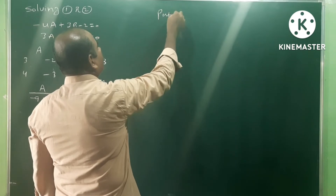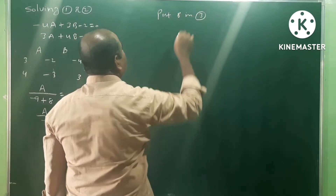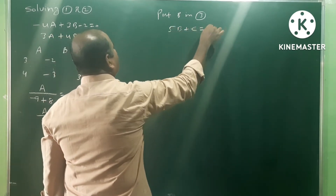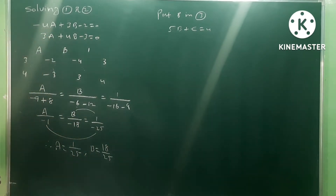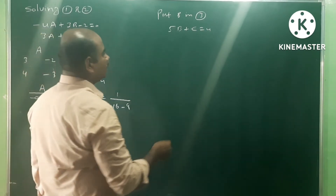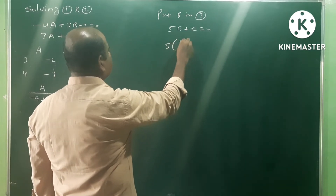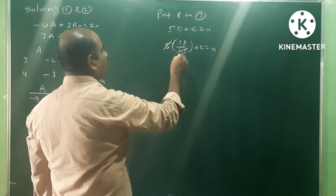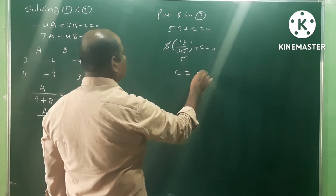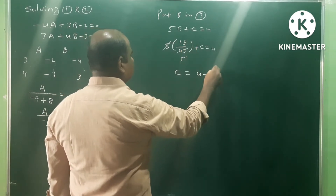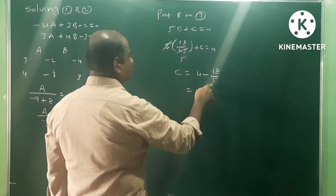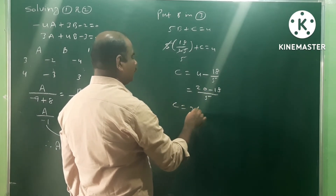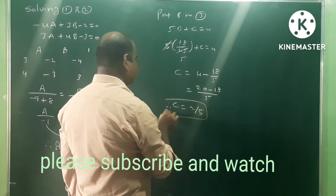Next, substitute b into equation 3: 5b + c = 4. So 5 × (18/25) + c = 4, which gives 18/5 + c = 4. Therefore c = 4 − 18/5 = (20 − 18)/5 = 2/5.